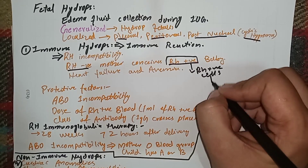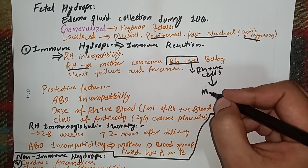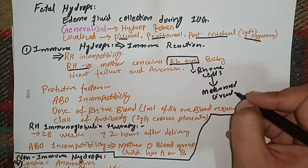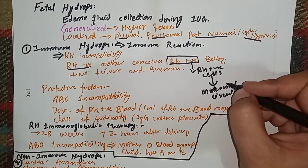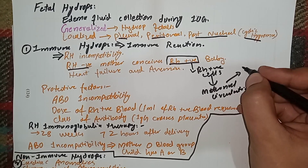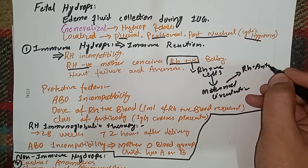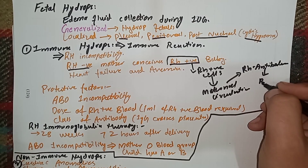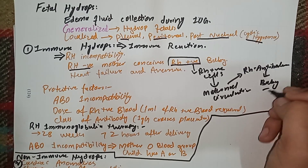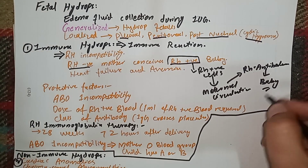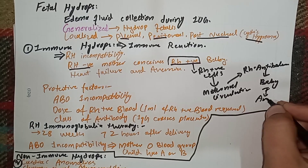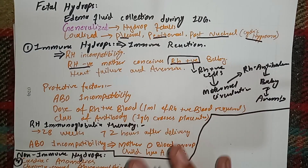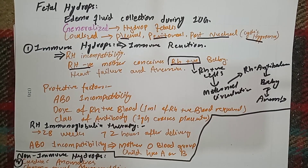In the maternal circulation, these RH-positive blood cells lead to the production of RH antibodies. These RH antibodies then diffuse into the baby's circulation and destroy the red blood cells of the baby, leading to anemia. The anemia then leads to heart failure and circulatory failure, which causes collection of fluid in the body and fetal hydrops occurs.